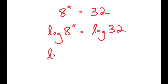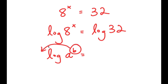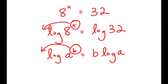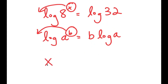Now, if I have something in the form log of a to the power of b, I can move b to the front of the logarithm. So this turns into b times log a — log of a to the power of b is equal to b times log a. In the case of log 8 to the power of x, we can think of x as b, so we move x to the front. I get x times log of 8 is equal to log of 32.